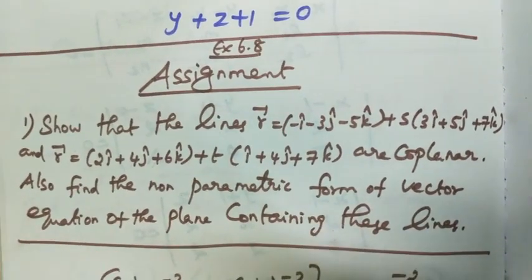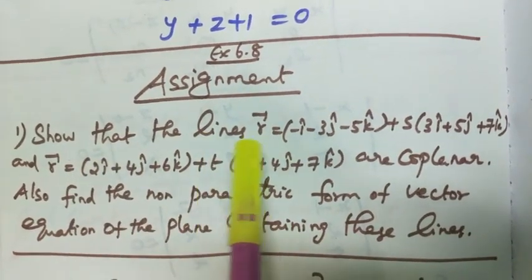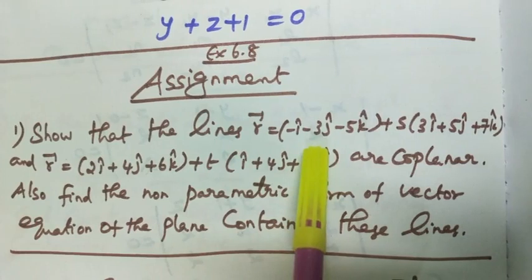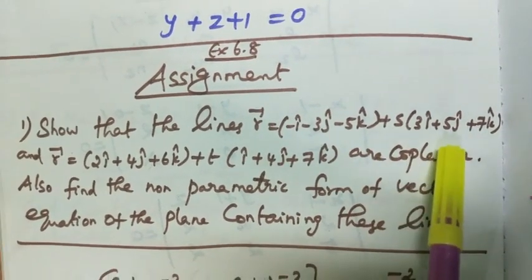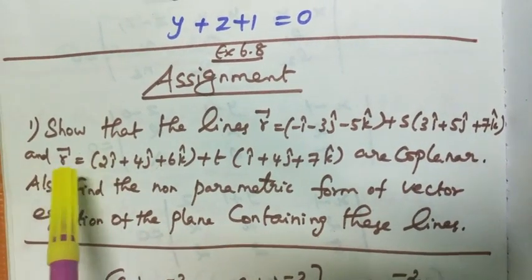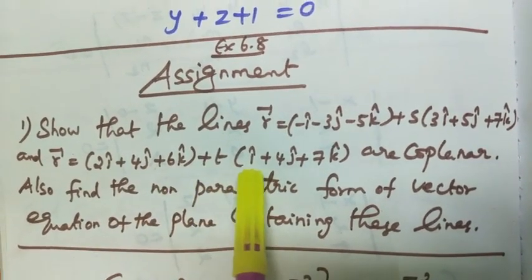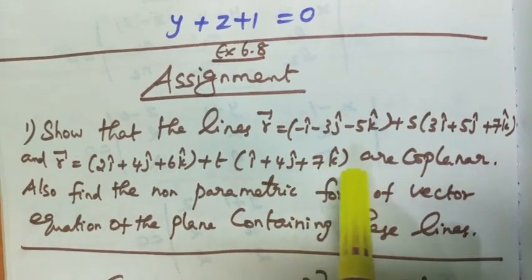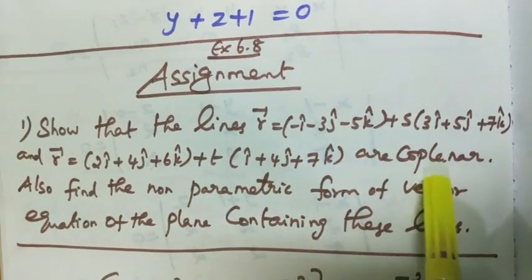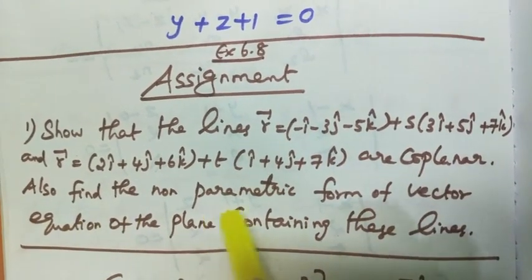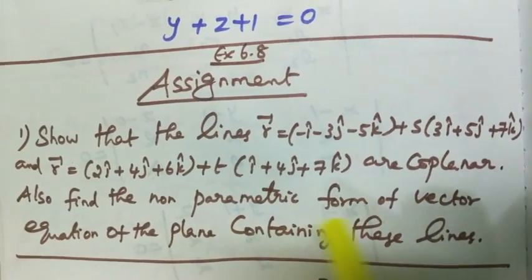Good morning students, exercise 6.8 assignments. Show that the lines R vector equals minus i minus 3j cap minus 5k cap plus s into 3i cap plus 5j cap plus 7k cap, and R vector equals 2i cap plus 4j cap plus 6k cap plus t into i cap plus 4j cap plus 7k cap are coplanar. Also find the non-parametric form of vector equation of the plane containing these lines.